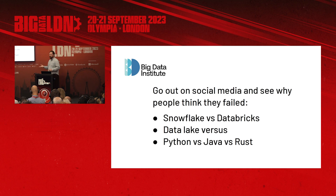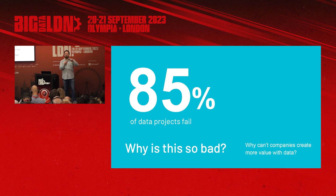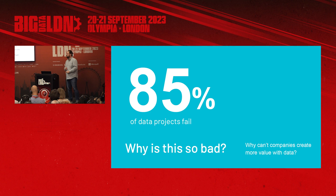So if you were to walk around the floor, look around the internet — what are people saying is the reason for failure? They say you used Snowflake and you should have used Databricks. They say you did a data lake, you should have done something else — a data swamp, this or that. Or you used the wrong programming language. You used Java instead of Python. You used Rust. Are these the reasons that people fail?